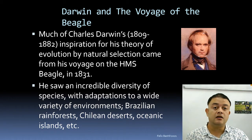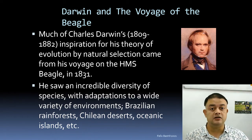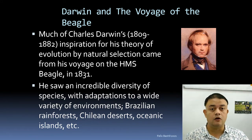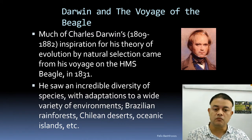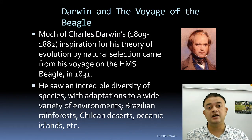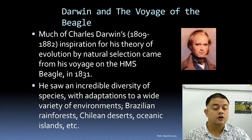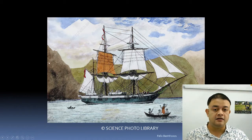He saw incredible diversity of species and adaptation to a wide variety of environments. By the way, adaptation was not Darwin's alone — it had already been described by Lamarck, the French natural historian. Darwin went to the Brazilian rainforest, Chilean desert, Patagonia in Argentina, and several oceanic islands, the most famous being the Galapagos.